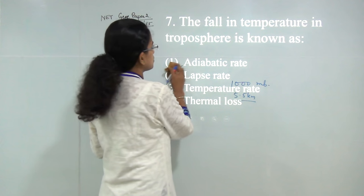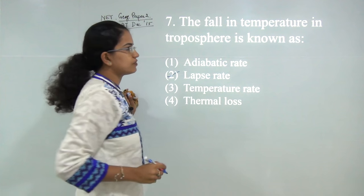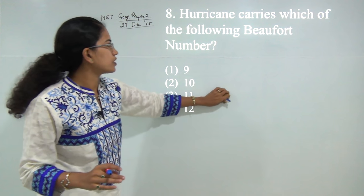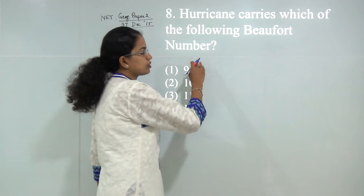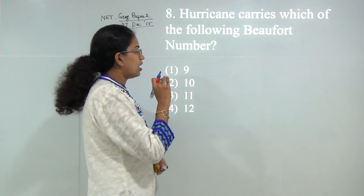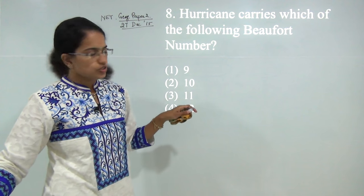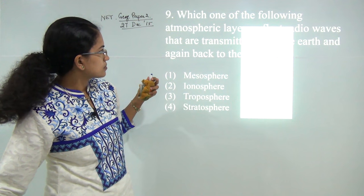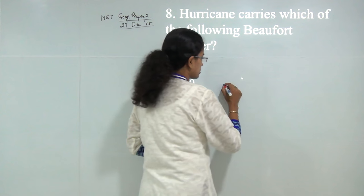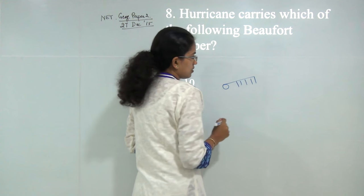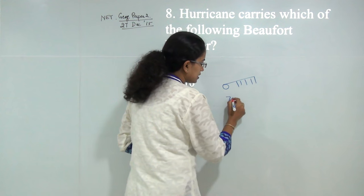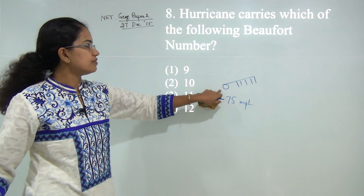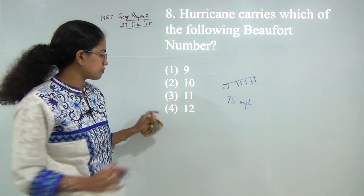The fall in temperature in troposphere is known as lapse rate. Next: hurricanes carry which Beaufort number? Beaufort numbers are numbered from 0 to 12, 0 being calm and 12 being the worst. Hurricanes are at 12. You have 5 lines and the speed is 75 miles per hour or more for hurricanes. The answer would be 4, that's 12.